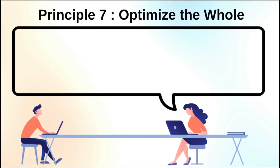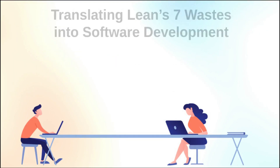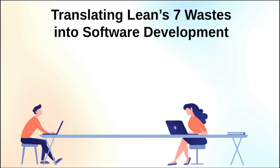The final principle is called optimizing the whole. This is a systems thinking approach — you want to make sure that you are not doing a local sub-optimization, and that you are optimizing for the entire system. Those are the seven principles of Lean as applied to software development. Mary and Tom Poppendick do a good job of encapsulating all the major DevOps principles in an easy-to-understand framework, but they went further and translated the Lean 7 wastes into a more applicable version for software development as well.